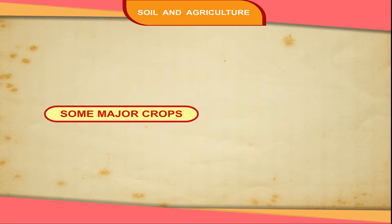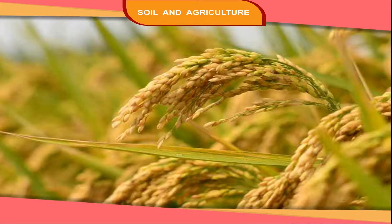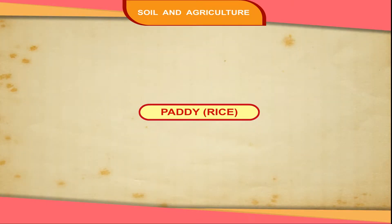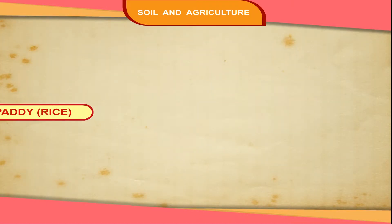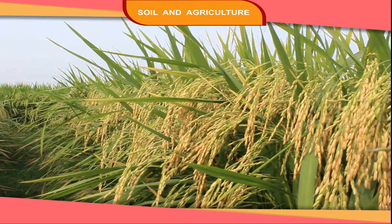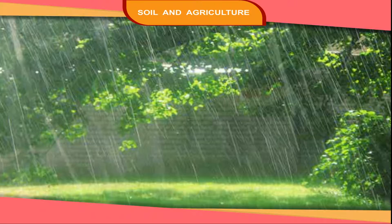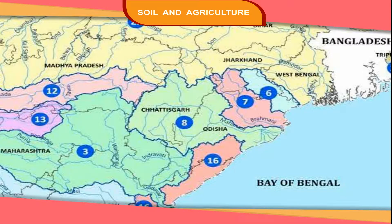Some major crops grown in our country are as follows. Paddy or rice is the main food crop of India. It is grown in the rainy season. Major producing states include West Bengal, Orissa, Tamil Nadu,